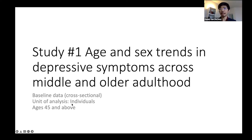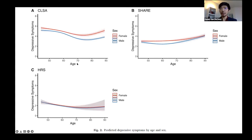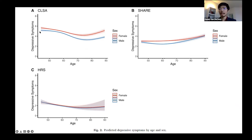Our unit of analysis here is the individual. We're looking at middle age and above. According to CLSA, there is a curve in depressive symptoms: throughout life, depressive symptoms decrease. This is a trend based on each age — at 50 years old, at 60, at 90, and so on. We modeled and visualized this into a curve with appropriate adjustments. What we see is that depressive symptoms decrease until a certain point where they start increasing again — a U-shaped curve in mid and late life.